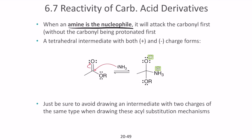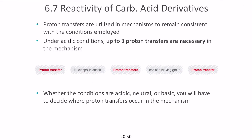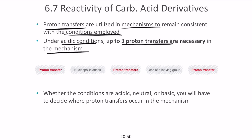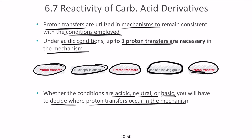When an amine is the nucleophile, it attacks the carbonyl first without prior protonation, creating a negative charge on oxygen and positive charge on nitrogen (NH₃⁺). Be sure to avoid drawing an intermediate with two charges of the same type — one gets positive, the other negative. Under general acidic conditions there can be up to three proton transfers in the mechanism: proton transfer first, then nucleophilic attack, then proton transfer, then loss of leaving group, then proton transfer again. Depending on whether conditions are acidic, neutral, or basic, you decide where proton transfers occur.